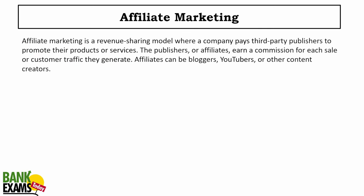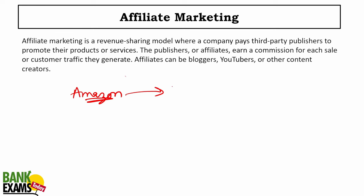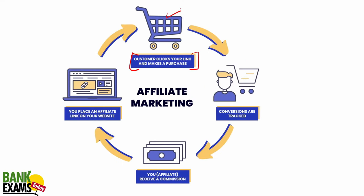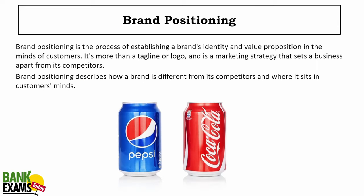Affiliate marketing: companies like Amazon hire affiliates on their website through an affiliate program. Customer clicks your unique affiliate link and makes a purchase. That purchase is tracked and you receive a commission. So you get a unique affiliate link, and whenever somebody makes a purchase using your unique link, you get a commission. That is affiliate marketing.